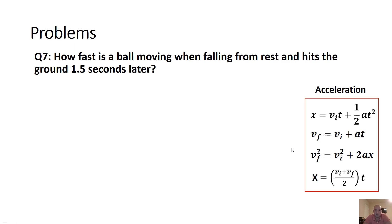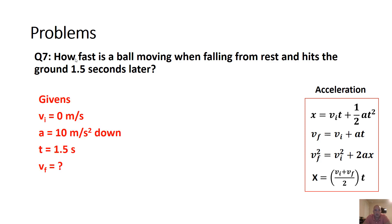Let's do our first math problem. How fast is the ball moving when it has been falling from rest for 1.5 seconds? Our givens: it's falling so acceleration is 10 meters per second squared down; it starts from rest so VI equals 0; T equals 1.5 seconds; we're looking for VF. There is no displacement X given, so we can't use equations that include X. That leads us to one equation: VF equals VI plus AT.